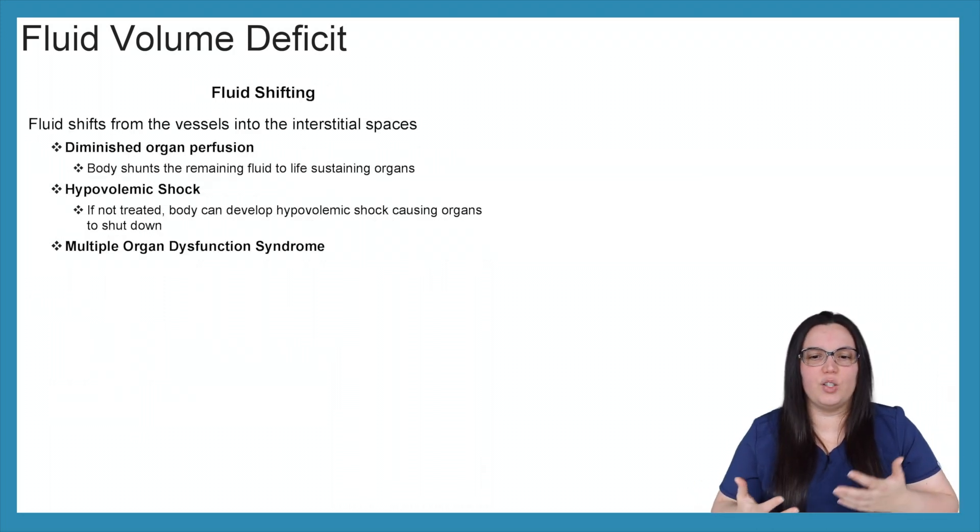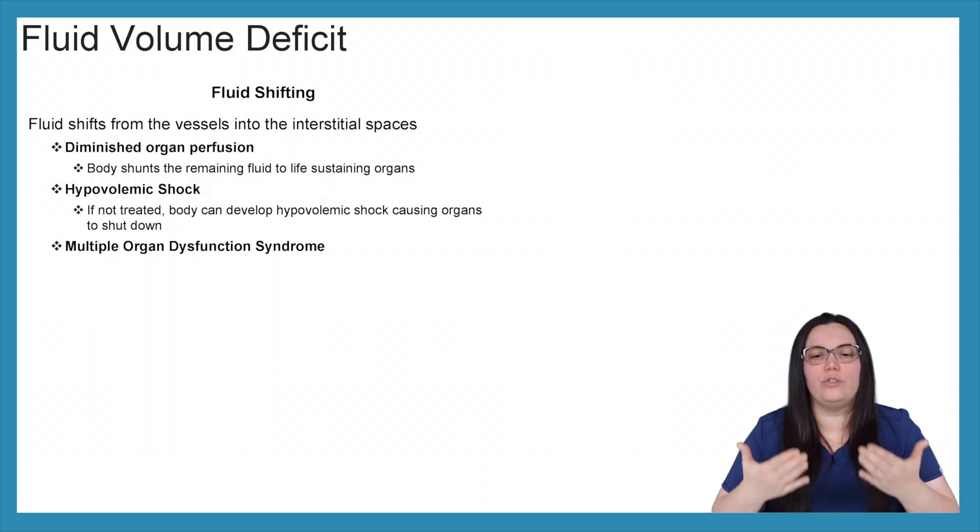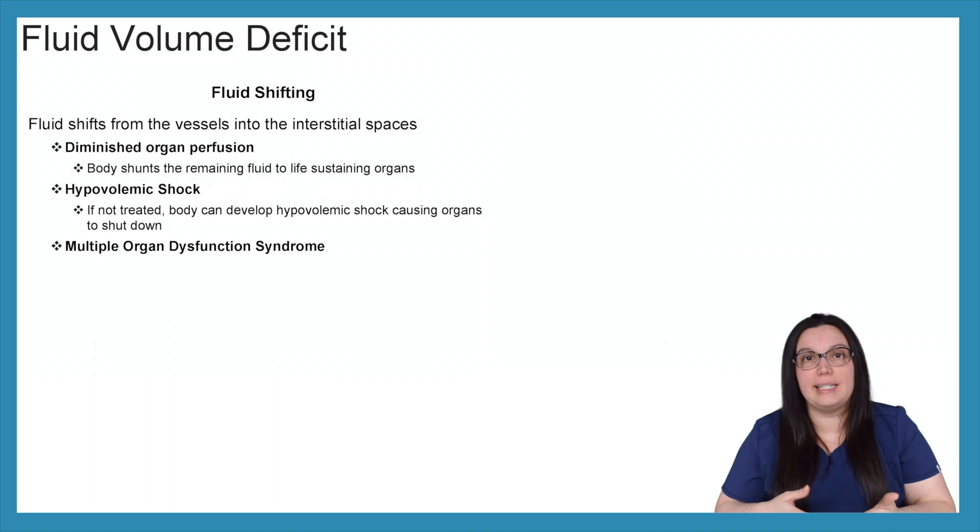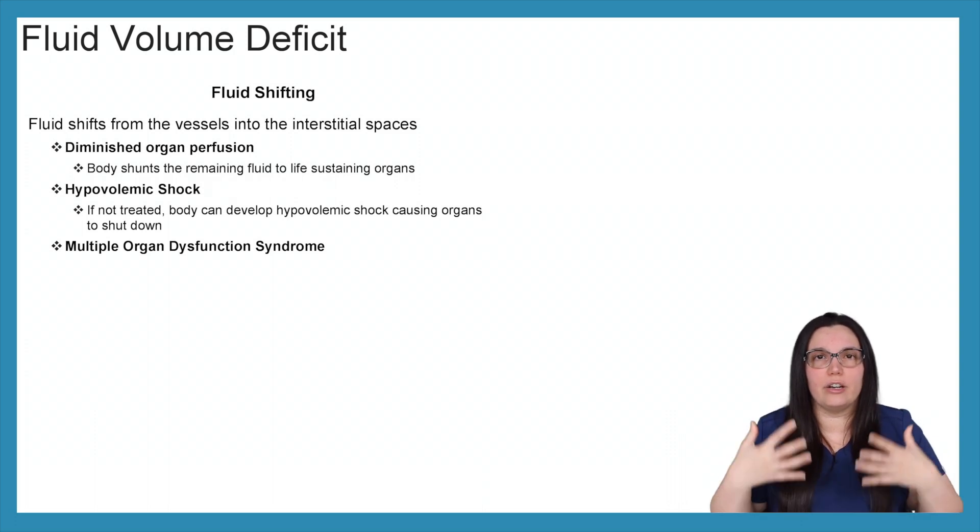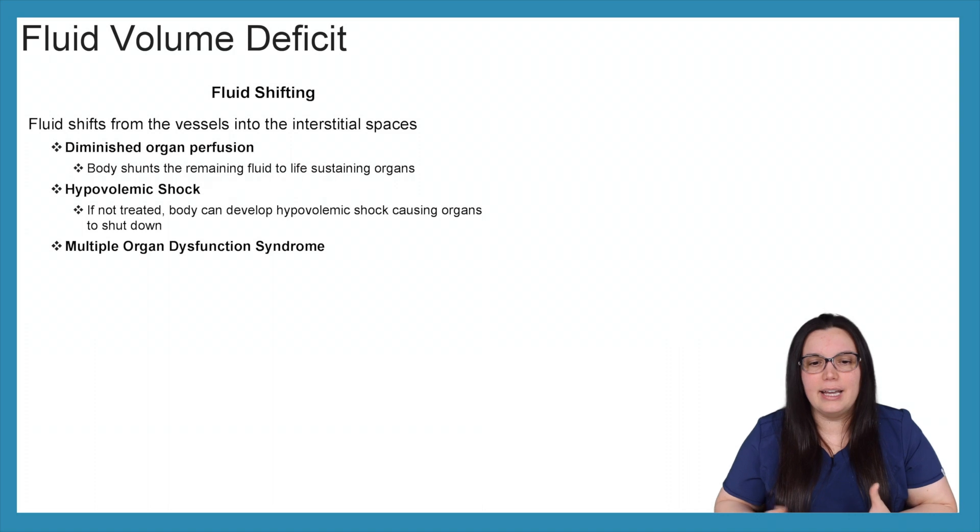So let's talk a little bit about fluid shifting. So fluid shifts from the vessels into those interstitial spaces. We have a diminished organ perfusion because the body is going to shunt that remaining fluid to his life-sustaining organs, just like we would see with sepsis. When we're having these fluid losses, they are going to start shunting whatever nutrients and oxygen that they have left to our brain, our heart and our lungs, because those are the things that are going to keep us alive. So the other organs are going to start to take a hit, thus leading to that diminished organ perfusion. We also have hypovolemic shock. If it's not treated, the body can develop hypovolemic shock causing our organs to shut down. And then lastly, we have multiple organ dysfunction syndrome. We've got multiple organs that are shutting down. I would highly recommend that you check out that systemic inflammatory response syndrome, as well as the multiple organ dysfunction syndrome videos to help kind of put together a lot of those processes that affect our bodies.